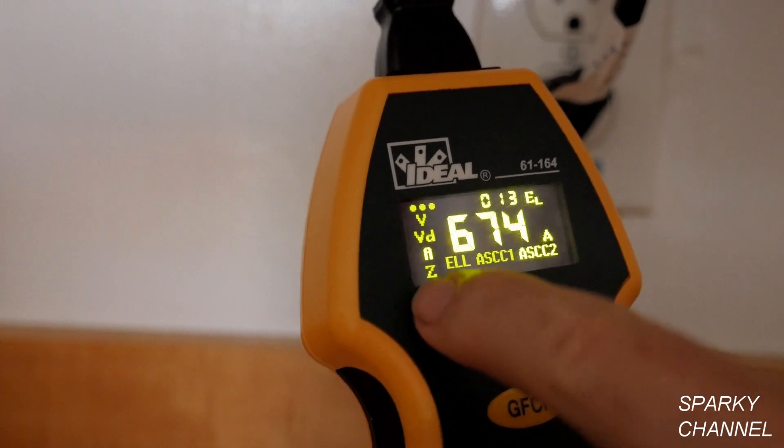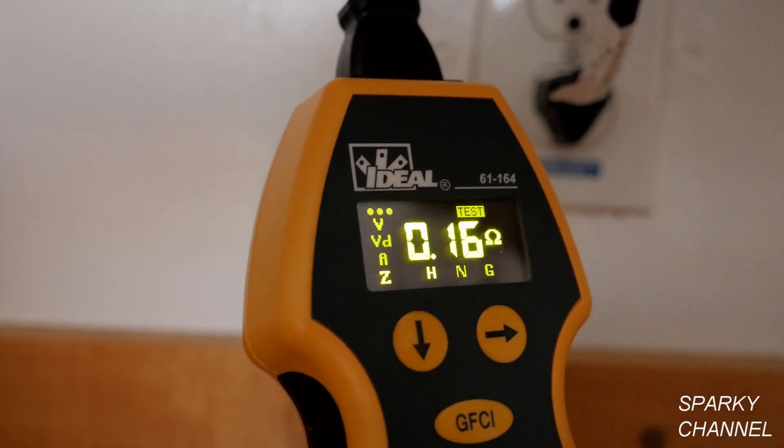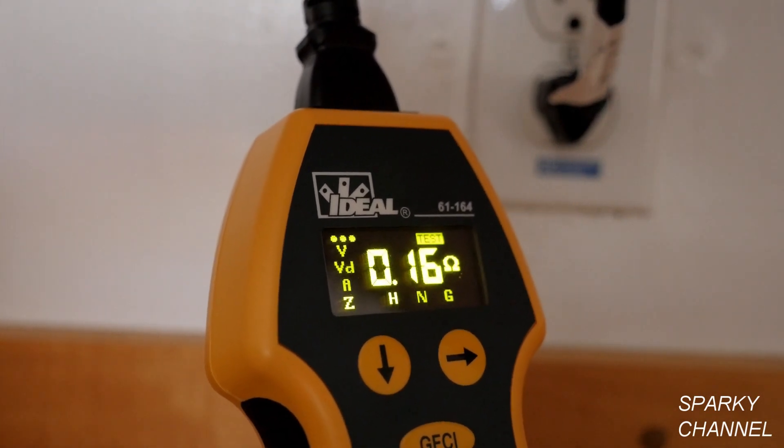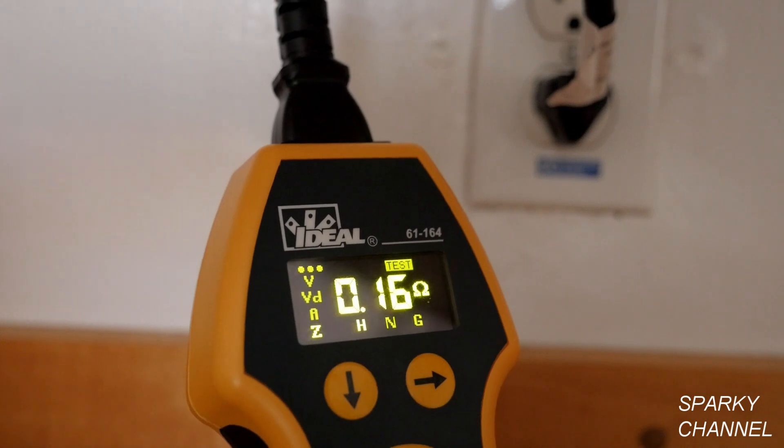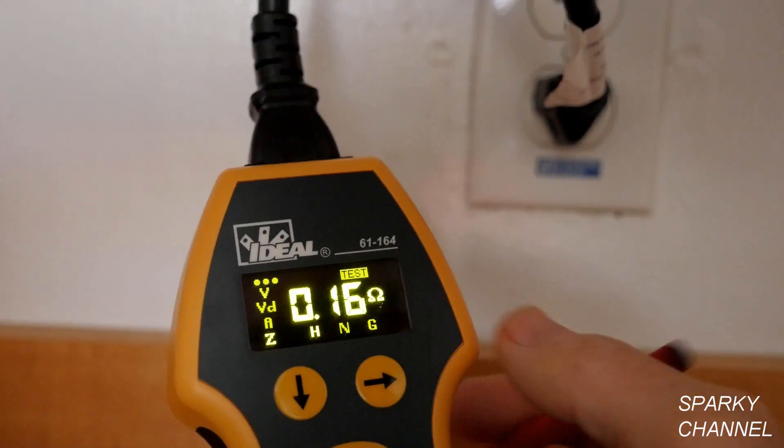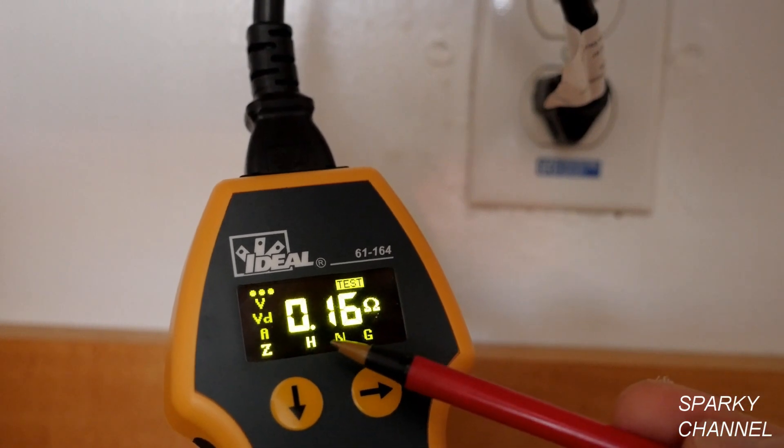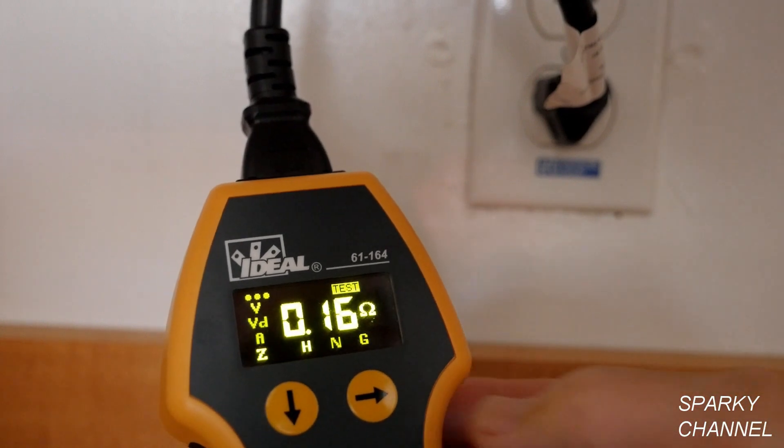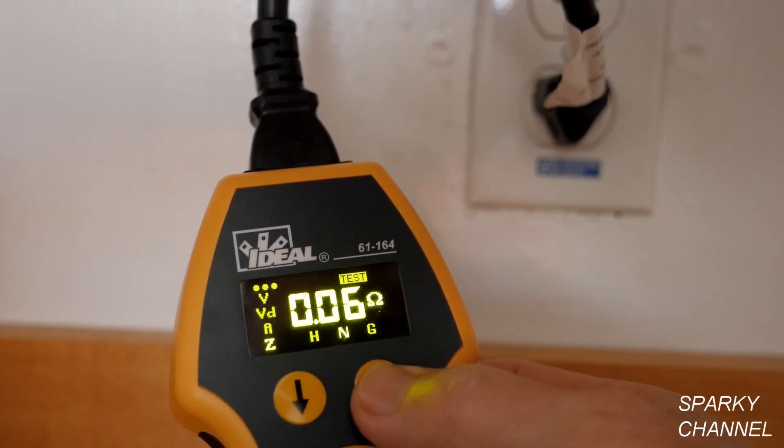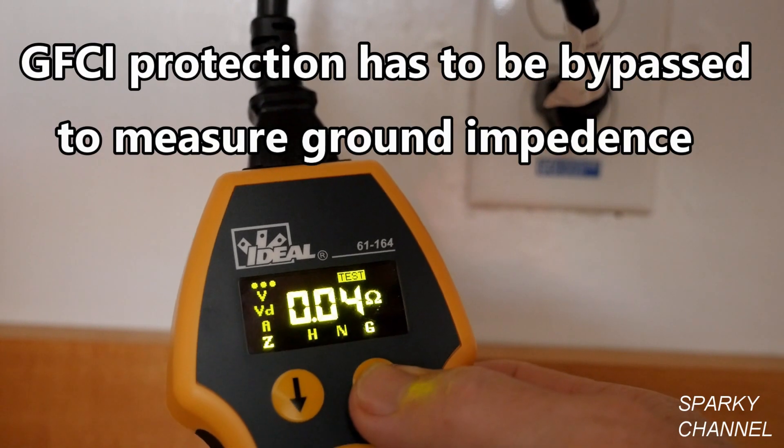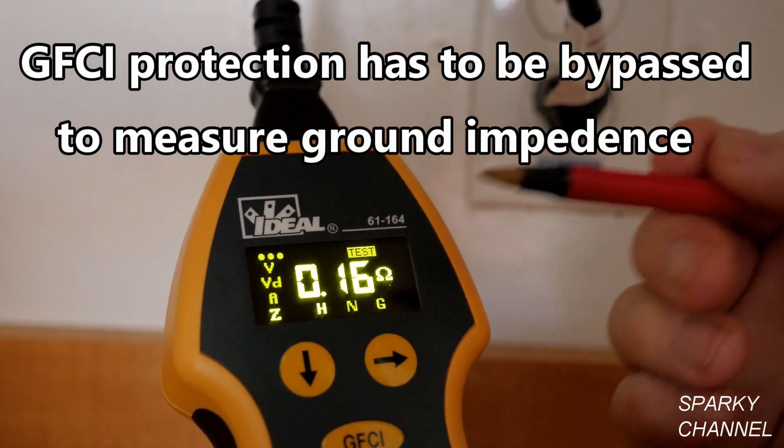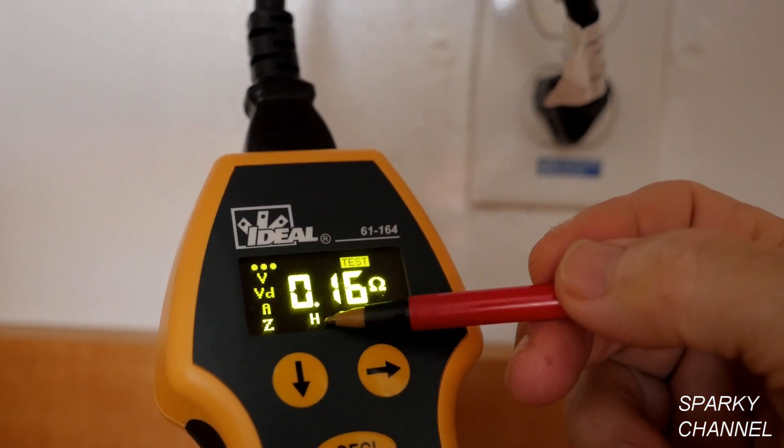Now if we press the down arrow one more time, that brings us to Z, which stands for impedance. Impedance is the effective resistance or opposition of an electrical circuit or component to alternating current. Each wire in the circuit has its own impedance. The hot is 0.16 ohms, the neutral is 0.06 ohms, and the ground is 0.04 ohms. Let's go back to the hot, because that one was pretty high. This is 0.16 ohms on the hot wire.